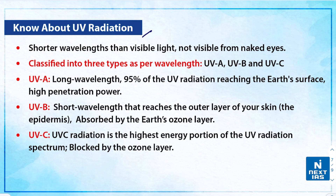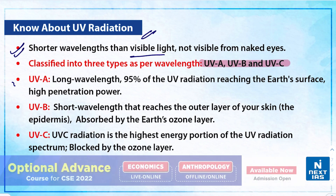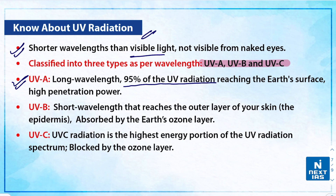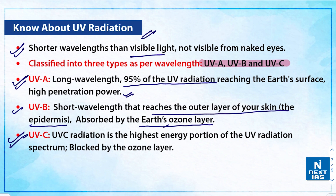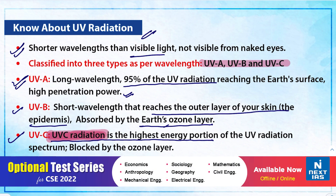Ultraviolet radiation is part of the electromagnetic light spectrum that reaches Earth from the sun. It has a shorter wavelength than visible light and therefore is not visible to the naked eye. UV radiation is classified into three types: UVA has a longer wavelength of around 320 to 380 nanometers and constitutes 95 percent of UV radiation reaching Earth's surface, with very high penetration power. UVB has a shorter wavelength, reaches the outer layer of skin (the epidermis), and is absorbed by the Earth's ozone layer. UVC is blocked by the ozone layer; it is the highest energy portion of the UV spectrum, harmful to humans, but also acts as a germicidal agent useful in purification processes.